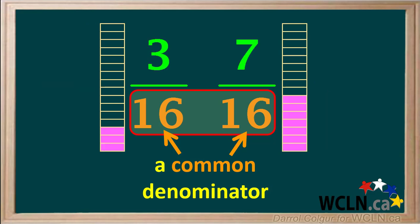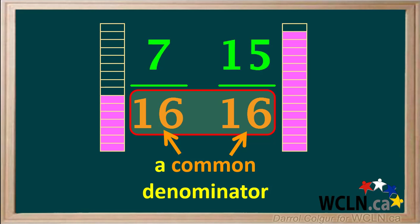For example, here are 3 sixteenths and 7 sixteenths. We can clearly see how much larger the fraction 7 sixteenths is than 3 sixteenths. And we can also clearly see how much larger the fraction 15 sixteenths is than 7 sixteenths.